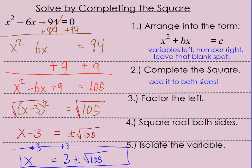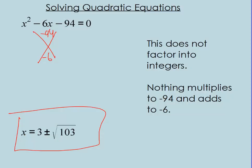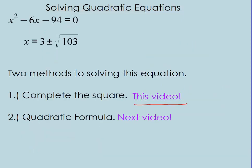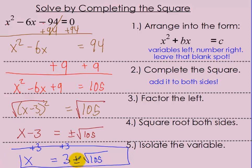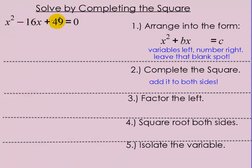You'll note that from what we got before it says 103 — there was a small arithmetic mistake earlier, but it should be 103. Not a big deal. Let's try another example. I want to solve by completing the square.